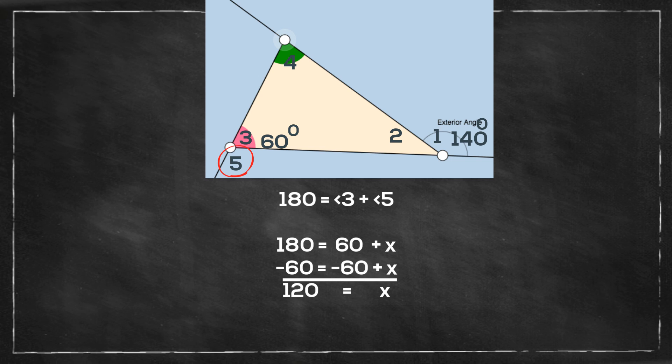Now let's find the angle measure of angle 5. We know that angles 3 and 5 are a linear pair. And linear pairs equal 180 degrees. So I can set 180 is equal to angle 3 plus 5. I can fill in what I know about angle number 3 which is 60 degrees. So 180 equals 60 plus x. Solve for x. 180 minus 60 is 120 degrees.